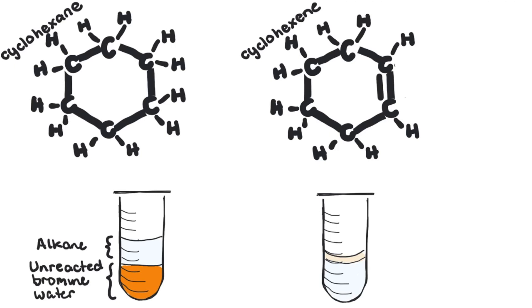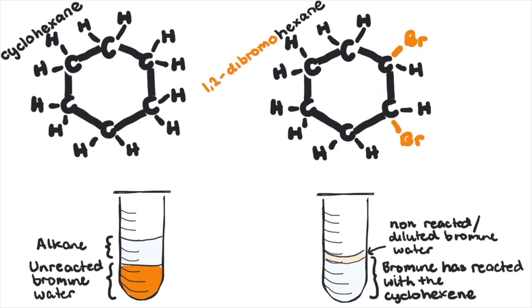In the cyclohexene example, the unsaturated hydrocarbon, the orange hue of the bromine water has faded to clear as each bromine atom has attached itself across the double bond. After all, it is the bromine responsible for the colour.